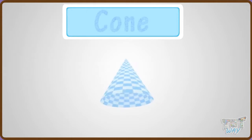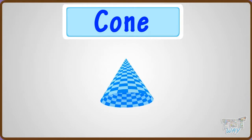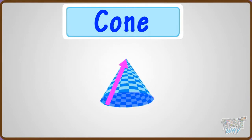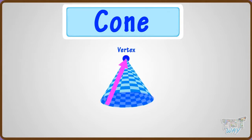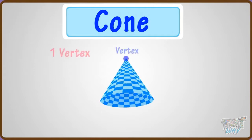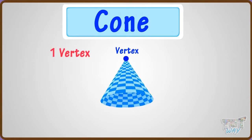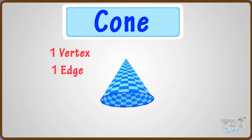Now let's learn another shape — cone. A cone is a 3D shape that tapers smoothly from a circular base to a point called its vertex. It has one vertex, which is the tip of the cone. It has one edge, which is round in shape.